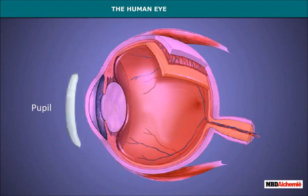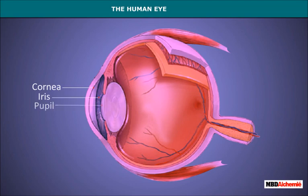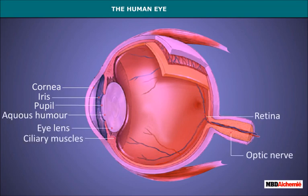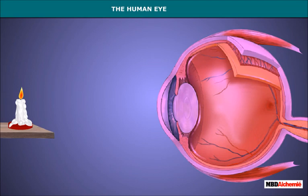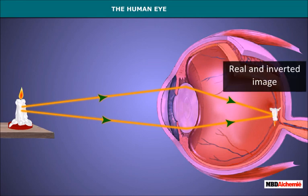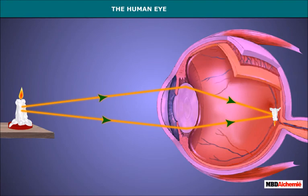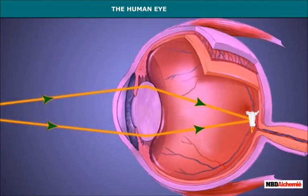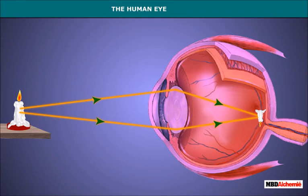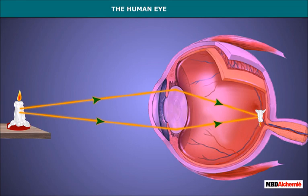The important parts of the eye are: cornea, iris, pupil, lens, ciliary muscles, retina, and optic nerve. Light rays entering the eye are focused on the retina by the lens. A real and inverted image of the object is formed on the retina. The retina consists of light-sensitive receptors known as rods and cones, which convert light energy into electrical energy. These electrical signals reach the brain via the optic nerve, which interprets them to produce the sensation of vision.